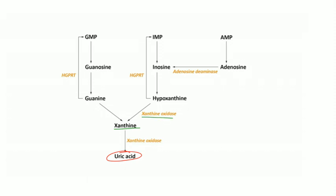We use allopurinol and febuxostat to inhibit xanthine oxidase and block uric acid production in gout patients. Allopurinol also inhibits the metabolism of azathioprine and 6-mercaptopurine, since both are metabolized by xanthine oxidase — so patients on allopurinol will have increased toxicity from those drugs.